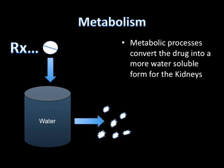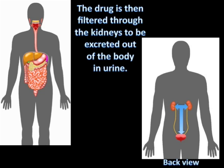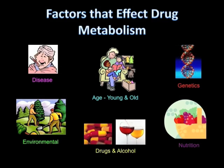Metabolic processes convert the drug into a more water-soluble form for the kidneys. The drug is then filtered through the kidneys to be excreted out of the body in urine.